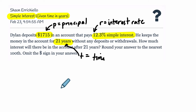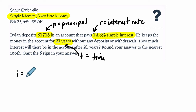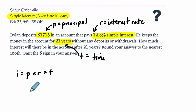So what do we do here? There's a formula we can use which says the interest you acquire equals the principal balance of the account times the rate times the time. This makes sense — let's just plug this in so you can see how it works.